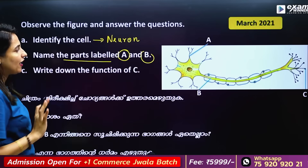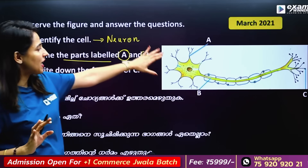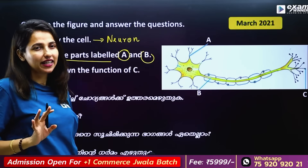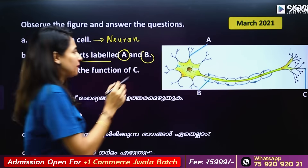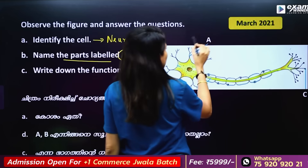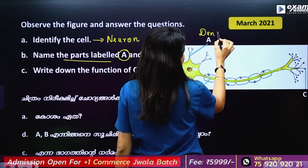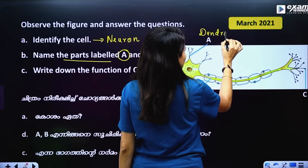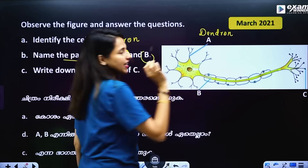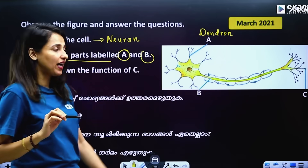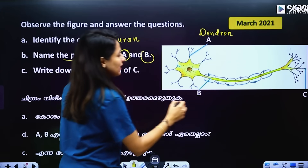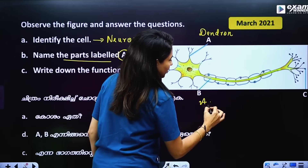Part A is Dendron. The branches are called Dendron. And B is Axon.